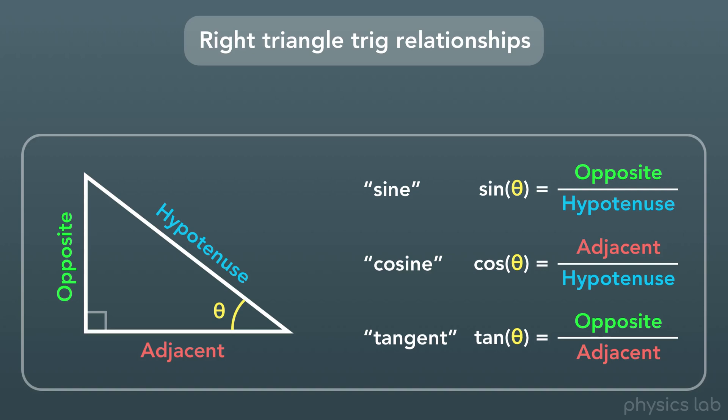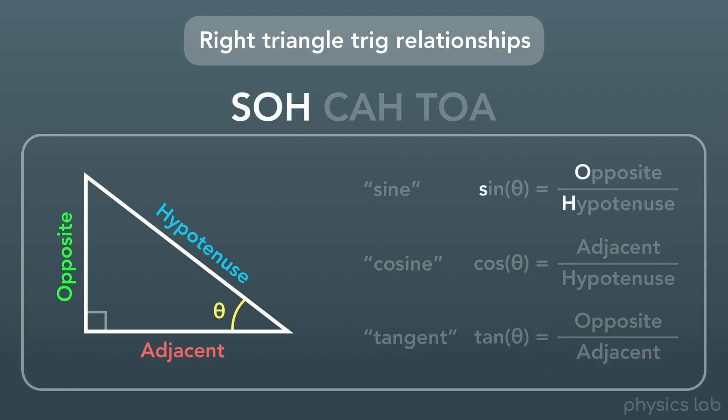And the way we can remember these three relationships is with the phrase SOH CAH TOA. The letters stand for sine is opposite over hypotenuse, cosine is adjacent over hypotenuse, and tangent is opposite over adjacent.